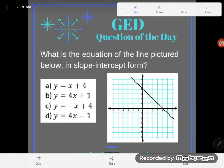It says, what is the equation of the line pictured below in slope-intercept form? I'll just remind you guys, we've talked about this a lot lately, but the equation of a line in slope-intercept form, that formula is on the GED formula sheet. Let me grab a different color.